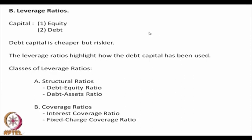The second type of ratios is leverage ratios. The source of capital for a company is either selling shares or taking loans. Debt capital is cheaper but riskier, and the leverage ratios highlight how this debt capital has been utilized. There are two classes of leverage ratios: structural ratios, which include the debt equity ratio and debt assets ratio, and coverage ratios, which include the interest coverage ratio and fixed charge coverage ratio.